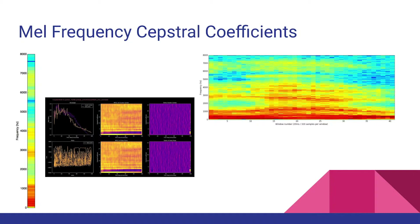To extract the MFCCs we first window our waveform. In my project I used 8-millisecond window lengths. The MFCC for each window is then calculated. Depending on the resolution required by the problem you can increase or decrease the number of coefficients. In my project I used 20 coefficients, which is a common number in audio recognition tasks.